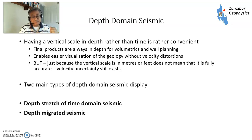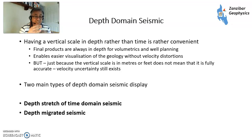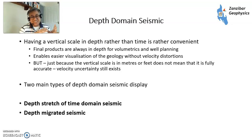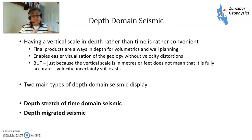There are two basic ways of doing it. The first is depth stretch: you take your time domain data, subdivide it into different layers of roughly equal velocity types, then scale those layers using the velocities to produce an image in depth. That's not always very accurate, but some people use it. Then there's depth migrated seismic, which adds a lot more value.